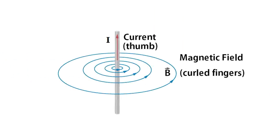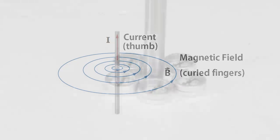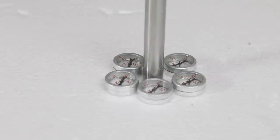This diagram might help you. As the current flows upward, the magnetic field will wrap around like the fingers of your right hand. Here's the situation in real life with the wire pointing upward. When I turn the current on, we see the compasses all pointing around it, just like the fingers of our right hand.